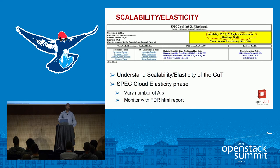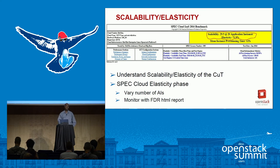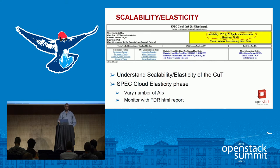For scalability and elasticity, that is exactly what SpecCloud was crafted for. It gives you a good result on what the scalability of your cloud is — how many application instances it could load and how consistent the performance was during the loading. As you can see here, scalability is 29.5 — a dimensionless score — showing 20 application instances were run. The last six is about 72%, meaning by the end at 20 application instances, performance had dropped to about 72%. You can vary the number of application instances and monitor the impact on scalability and elasticity.